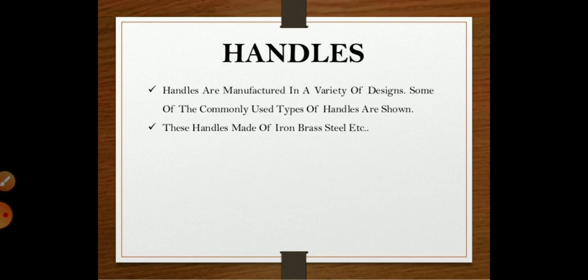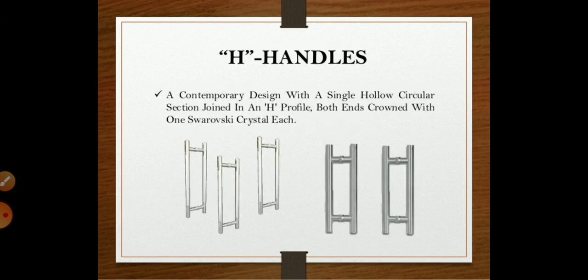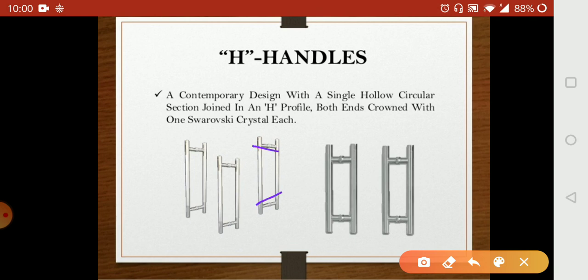Next are handles. There are different types of handles, manufactured in a variety of designs, but there are some commonly used ones. Most handles are constructed from iron, brass, or steel. The first type is the edge handle — you can see the shape of the edge. It is designed with a single hollow circular section joined in an edge profile, and both ends are crowned with a crystal.